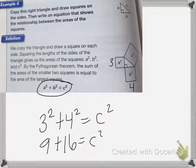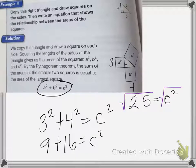So 9 plus 16 is equal to 25 equals C squared. Now to get rid of this square, I would have to take the square root of both sides, because remember the square root cancels out a squared. So then I'd have C equals the square root of 25, which is equal to 5.